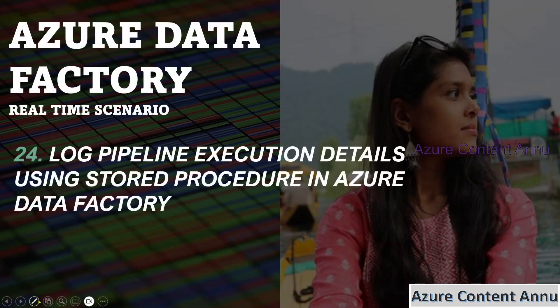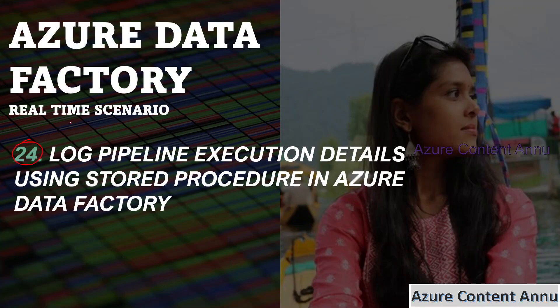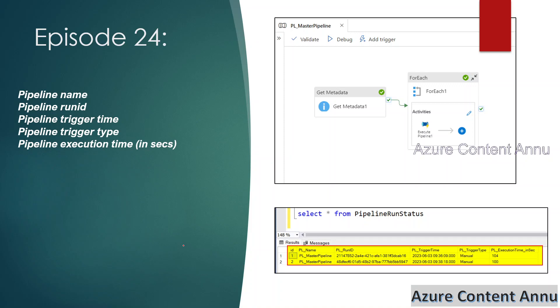Hi friends, welcome to Azure Content. This is part 24 in the Azure Data Factory real-time scenarios playlist. In this video, we are going to learn how to log pipeline execution details using stored procedure in Azure Data Factory. This is the same requirement we achieved in the previous video using script activity, and we discussed that the same can be implemented using either lookup activity or stored procedure activity.